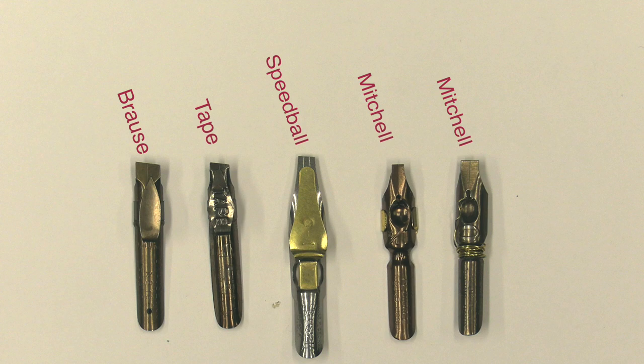Here are the nibs I might recommend you use in the course. The first one is the Brause nib, and as you can see, the reservoir is on the top of the nib. It's a very good nib. The second one is the Tape nib. It's also like the Brause nib in that the reservoir is at the top.